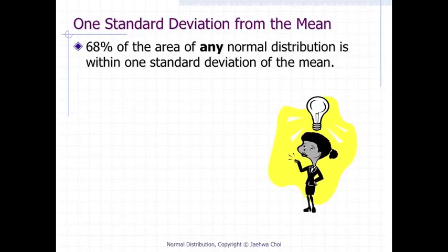The two normal distributions you just saw are specific examples of the general rule that 68% of the area of any normal distribution is within one standard deviation of the mean.